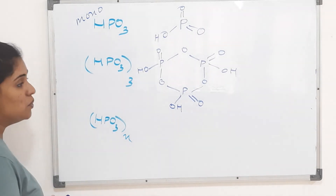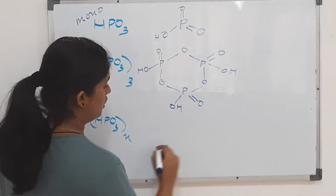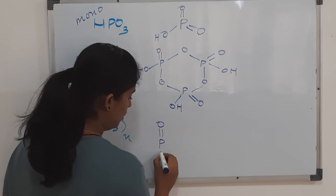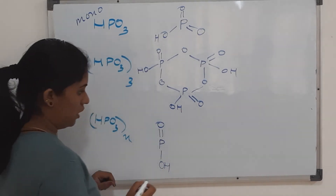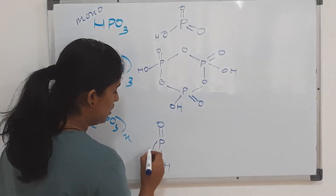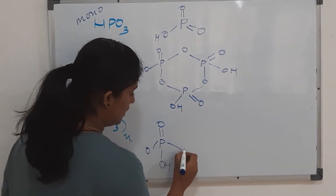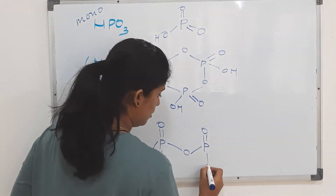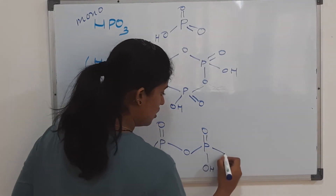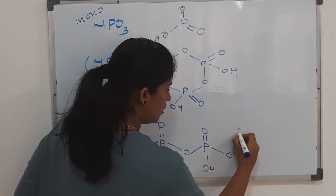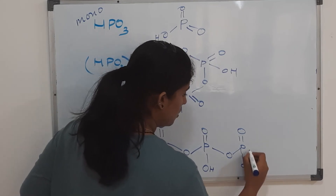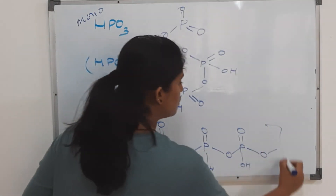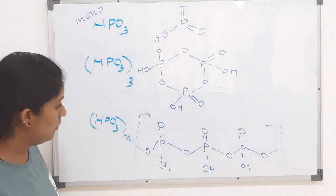The (HPO₃)ₙ unit is a polymeric structure — a long chain polymer. Each unit has a phosphorus with a P=O double bond and one OH group, making it monobasic. Apart from that, there are bridging oxygen atoms connecting each unit to the next in the chain, and this whole repeating unit continues indefinitely as the polymeric structure.